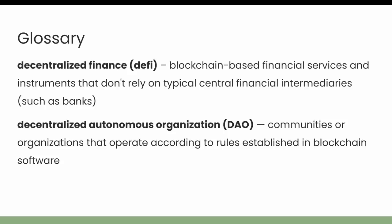Finally, we have decentralized finance, abbreviated to DeFi. This refers to blockchain-based financial services and financial instruments that don't necessarily rely on typical centralized financial intermediaries like banks or brokerages. Decentralized autonomous organizations, abbreviated to DAOs, refer to communities or organizations that have rules established in blockchain software via smart contracts. Typically, participants can exercise voting power by using tokens to vote on community decisions, and they've become somewhat popular in recent years.